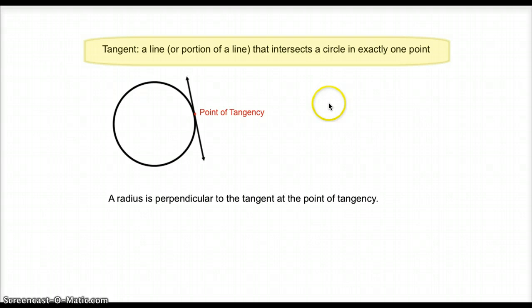A tangent is a line or a portion of a line that intersects a circle in exactly one point. In this particular diagram, this is the tangent line. And the point that the circle and the line both share is known as the point of tangency. It turns out that if you have a radius and you draw it to the point of tangency, that the radius is actually perpendicular to the tangent line at that point. So we know that that's a 90-degree angle.